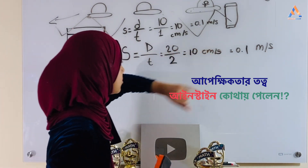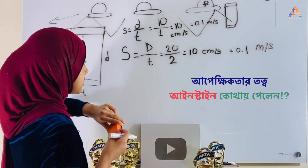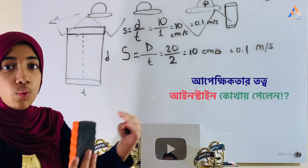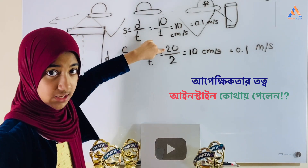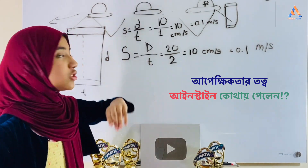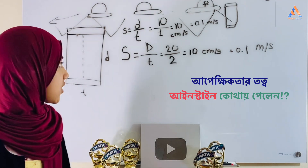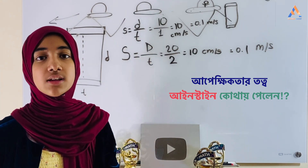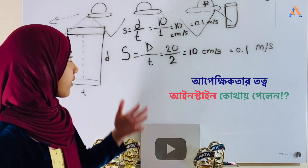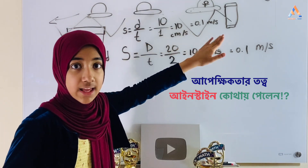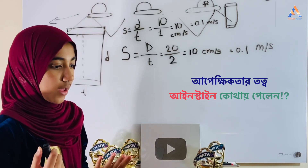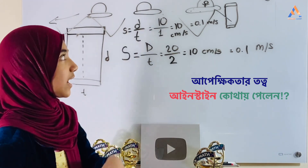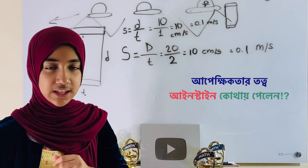So as you can see, dear viewers, the faster you travel through space, the slower you travel through time. Einstein modified Newton's theory and made Maxwell's law true. He proved it and changed physics in a way that we use right now. I hope you all enjoyed this video and understood how Einstein founded the theory of relativity. Thank you and Assalamualaikum.